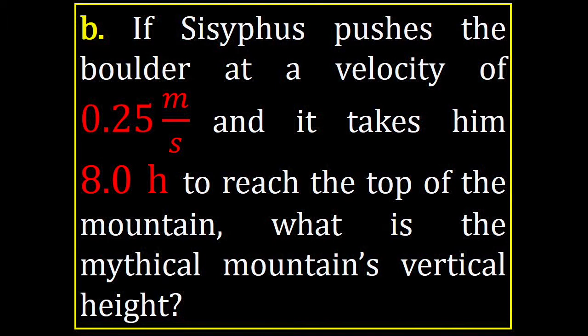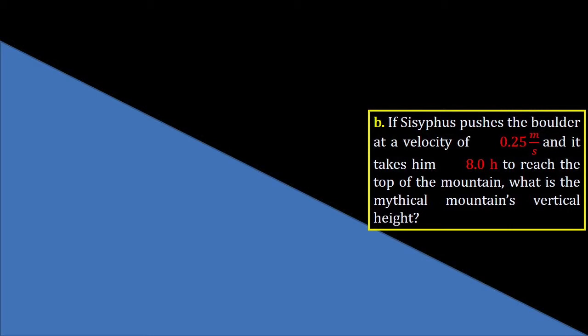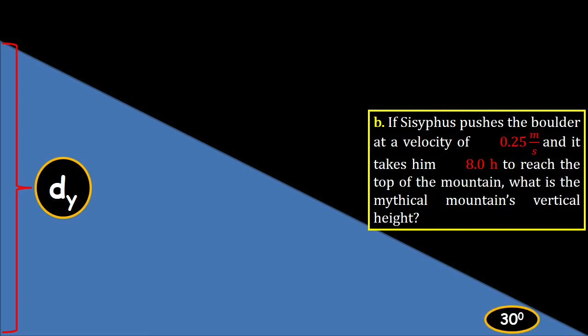So now, if Sisyphus pushes the boulder at a velocity of 0.25 meters per second, and it takes him eight hours to reach the top of the mountain, what is the mythical mountain's vertical height? Well, I'm going to push, it's going to take eight hours to push the hypotenuse, and I'm going to push that at 0.25 meters per second, so make no doubts about it that it's actually the hypotenuse that I'm pushing it, and then I want to know if the angle is 30, and I want to know the height of it, so I want to know the value, so dy is really that value there. So I'll let this play out, and see if you can come up with the value, it's 30 degrees.